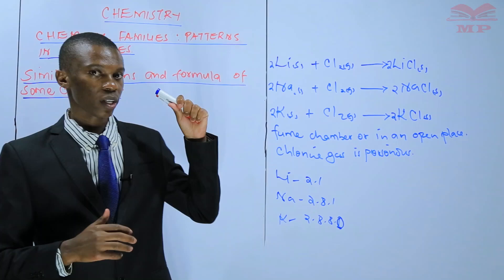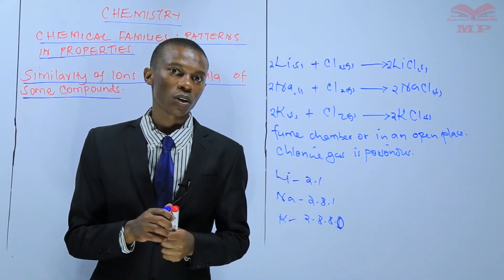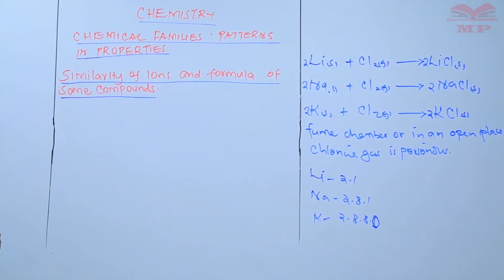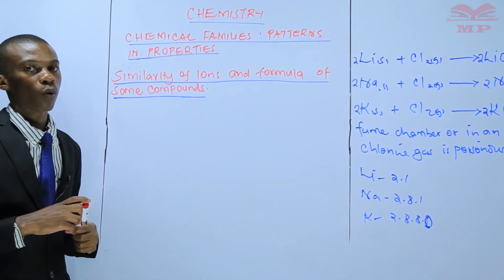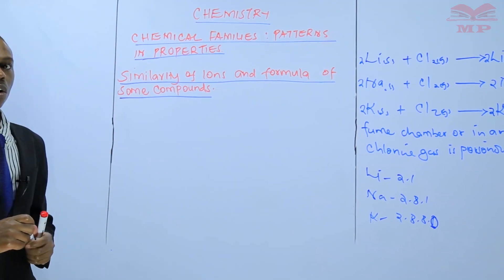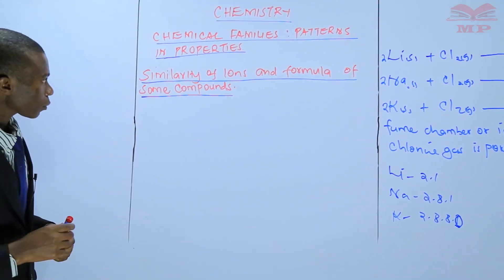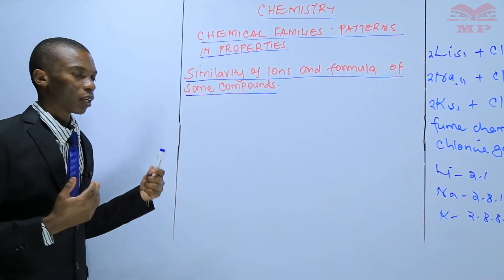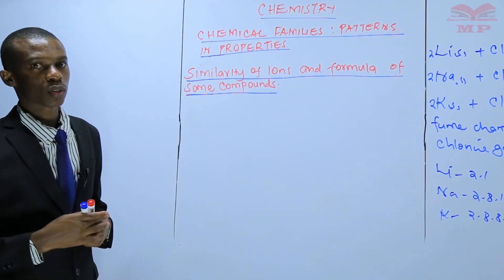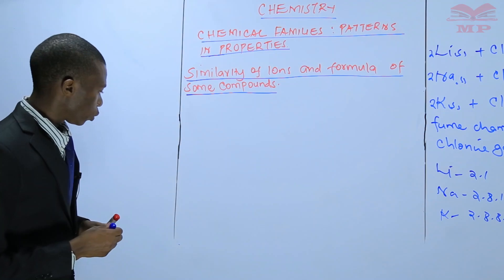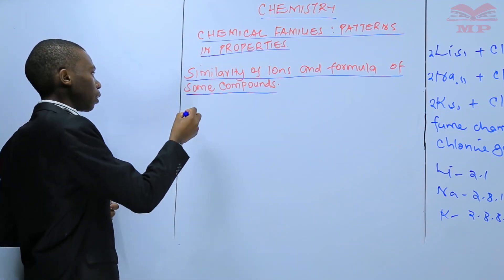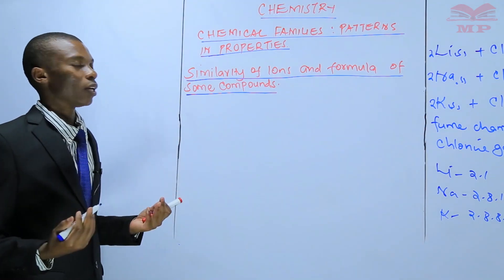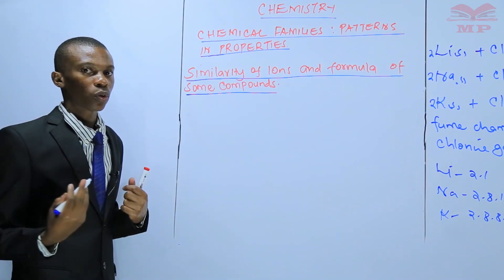Ensure you remember that very well, especially writing correct chemical equations. In this lesson, I want us to discuss the similarity of ions and formula of some compounds of alkali metals. We are going to use a table form showing hydroxides, oxides, and chlorides.